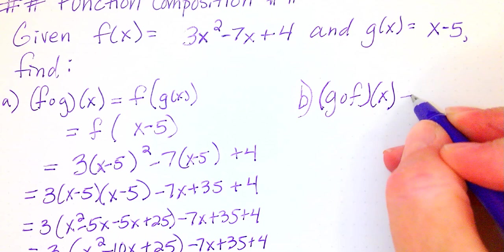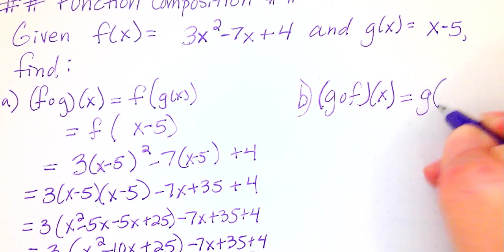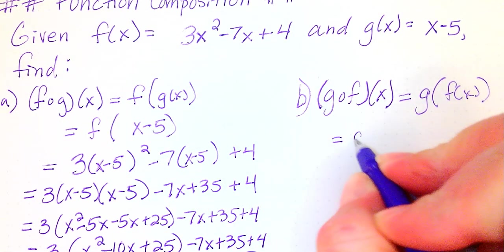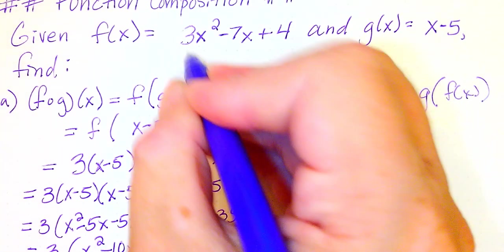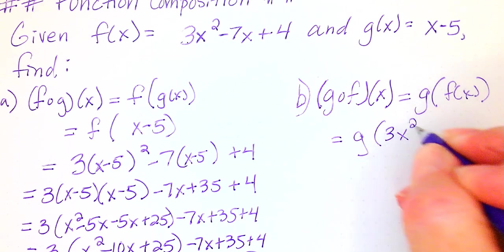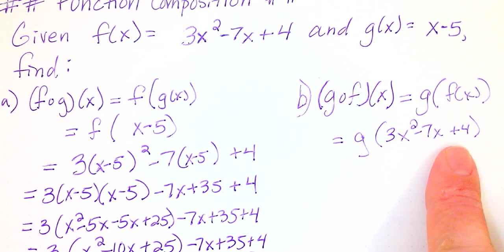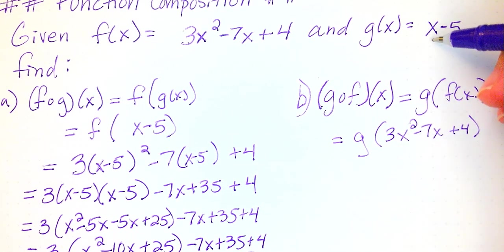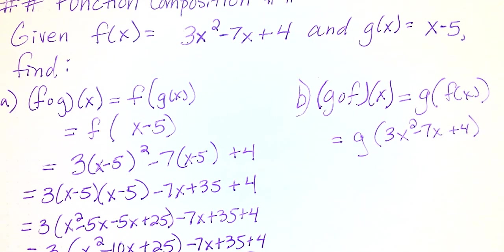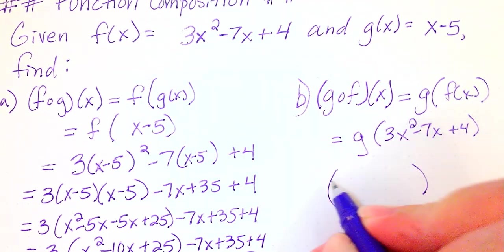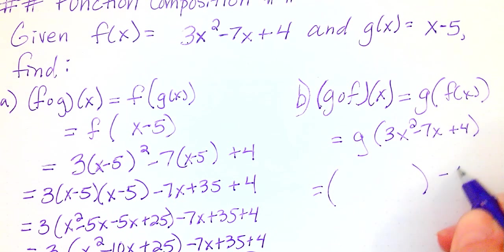All right, again, I'm going to rewrite this as g of f of x. And then what do we have for f of x in this case? Well, f of x is this long 3x squared minus 7x plus 4. And I'm taking all of that and putting it right here where x is in g.